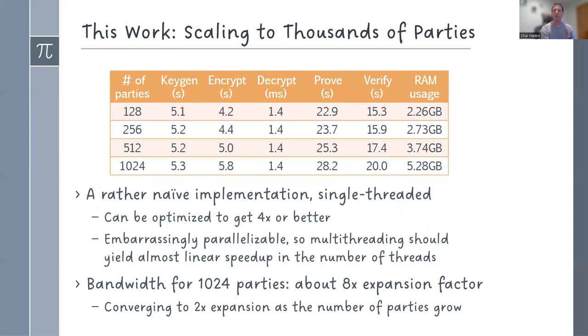Before showing you how we do that, let me just briefly sketch the techniques that we present here and how well they perform. So we have an implementation of our techniques. They're rather naive, they're single-threaded, the exponentiation is not fast, et cetera. But it was designed to show feasibility. You can easily implement like a 4x factor, or maybe more. It's embarrassingly parallelizable, so multi-threading should help. But what you get is with a thousand parties, it takes about half a minute to prove, and maybe 20 seconds to verify. So not blazing fast, perhaps, but entirely feasible.